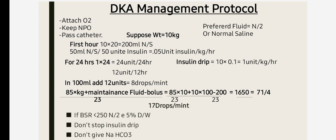For example: 0.1 unit per kg per hour equals 1 unit per kg per hour; for 24 hours that would be 24 units. We make the drip for 12 hours, so in 100 ml we put 12 units of insulin. 120 divided by 12 hours equals 8.3 drops per minute, meaning these 12 units are given at 8 drops per minute in 100 ml of normal saline.